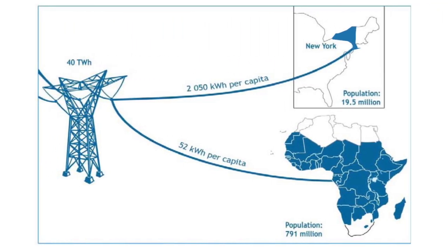While energy poverty exists across Asia, Latin America, the Middle East, and Africa, the most critical need is in sub-Saharan Africa, where today only 31% of the population has access to electricity. Removing South Africa from the equation, that percentage drops to 28%. According to the UNDP, residential electricity consumption in sub-Saharan Africa excluding South Africa is roughly equivalent to consumption in the state of New York — meaning the 19.5 million inhabitants of New York consume roughly the same quantity of electricity, 40 TWh, as the 791 million people of sub-Saharan Africa.